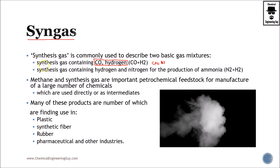And carbon monoxide — though it can also be referred to, especially if you're talking about ammonia, as the gases that are the raw materials for this, which is nitrogen gas and hydrogen gas. So typically from now on in this course, whenever I say syngas, I will be referring to this mixture — the carbon-rich mixture. Methane and synthesis gas, or syngas, are very important petrochemical feedstocks.